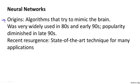The origins of neural networks were as algorithms that try to mimic the brain. There was the sense that if we want to build learning systems, why not mimic perhaps the most amazing learning machine we know about, which is perhaps the brain.